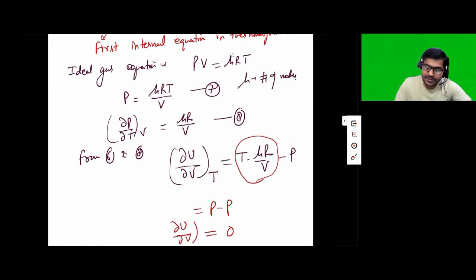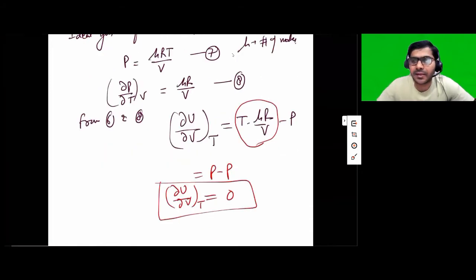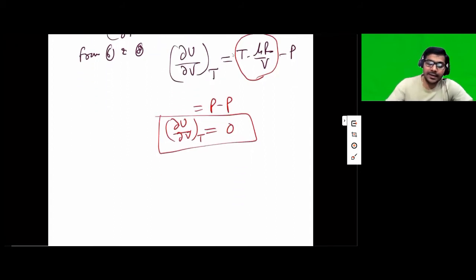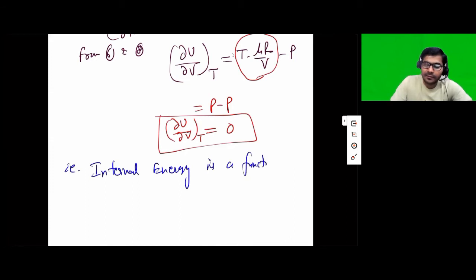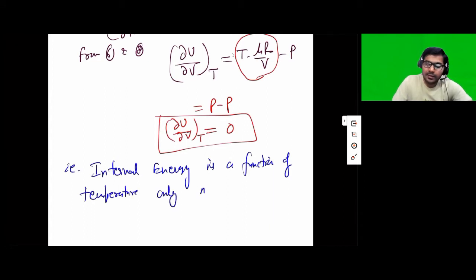What does this result tell us about the dependency of internal energy on volume and temperature? It tells us clearly that at constant temperature, internal energy does not depend on volume. That means internal energy is a function of temperature only in case of an ideal gas.